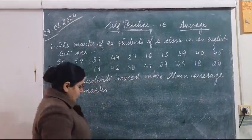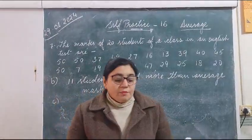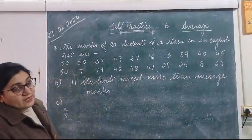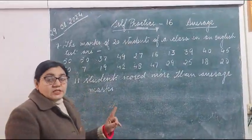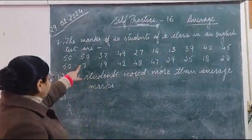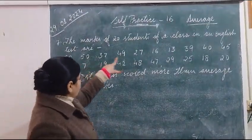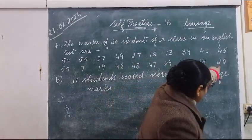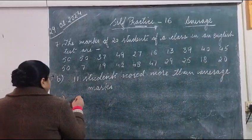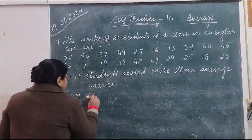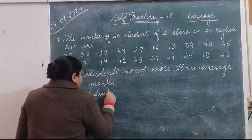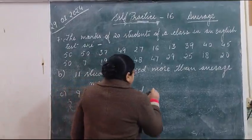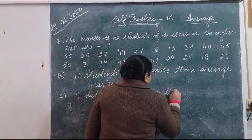Now C part. In C part it is given: how many students scored marks less than the average marks? Average marks is 33.55. So how many? Counting: 1, 2, 3, 4, 5, 6, 7, 8, and 9. So 9 students scored less than average marks.